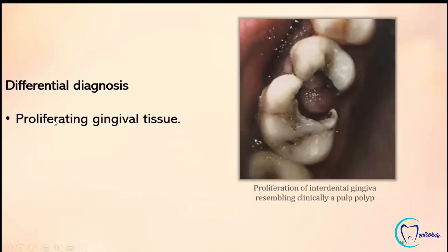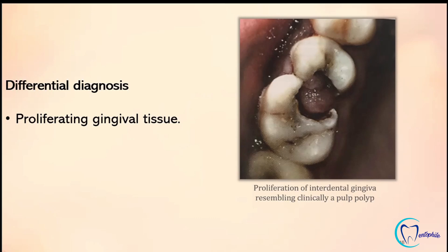The differential diagnosis includes proliferating gingival tissue. Sometimes, gingival tissue adjacent to a large carious cavity can proliferate, mimicking a pulp polyp. To differentiate whether the tissue is of pulpal or gingival origin, we must trace the stalk of the tissue to determine whether it is arising from the pulp or from the gingiva.